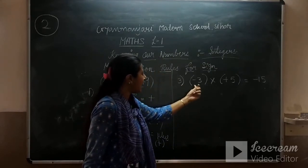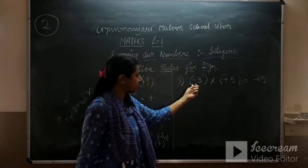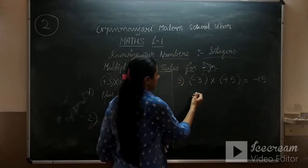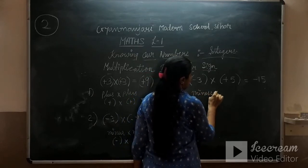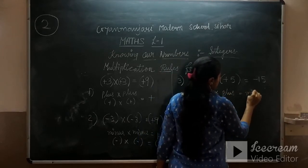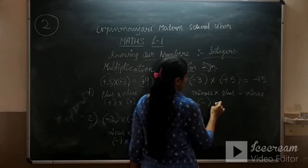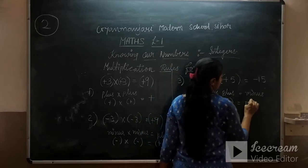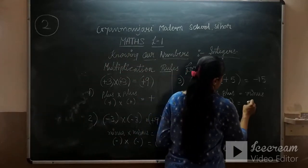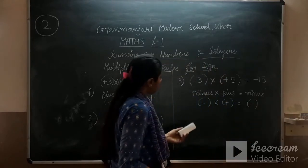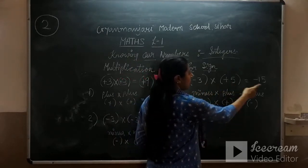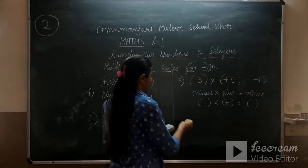The third rule: minus 3 into plus 5 — one integer is negative and the other integer is positive — then it will result in a minus integer, because minus into plus equals minus. In symbolic form, minus into plus equals minus.